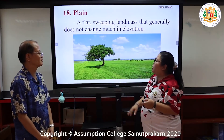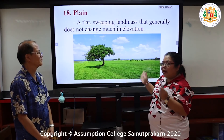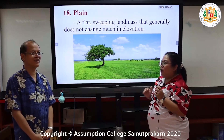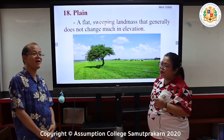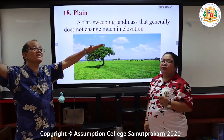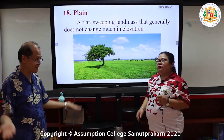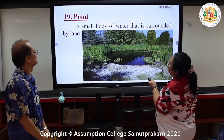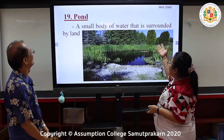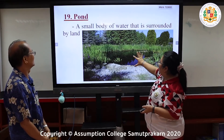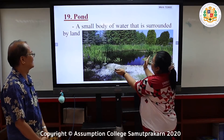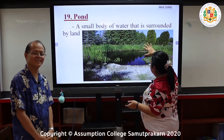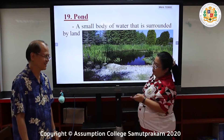We can see plains in the central region of Thailand, where you can find vast rice fields, because rice loves to grow on flat plains. A pond is a small body of water that is surrounded by land — it is not very large.